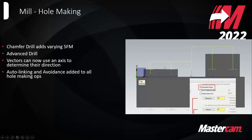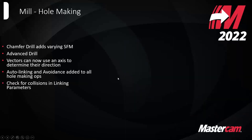There's now auto linking and avoidance added to all hole-making operations. It takes your part and your stock into account — just check that box and it'll make sure retracts between passes always clear whatever geometry is defined. There's also now a check for collisions in the linking parameters of hole-making operations. As long as you've defined your full tool assembly with the holder, it automatically checks tool reach.